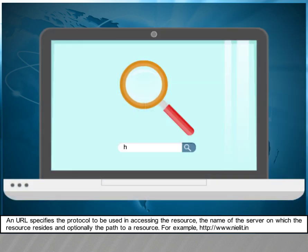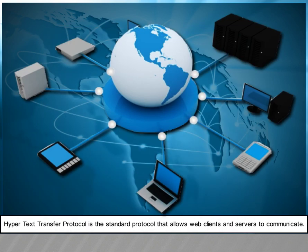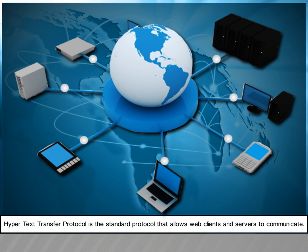A URL specifies the protocol to be used in accessing the resource, the name of the server on which the resource resides, and optionally the path to a resource. Hypertext Transfer Protocol is the standard protocol that allows web clients and servers to communicate.